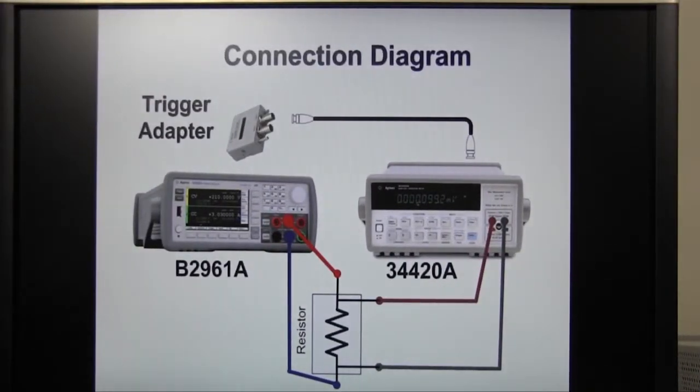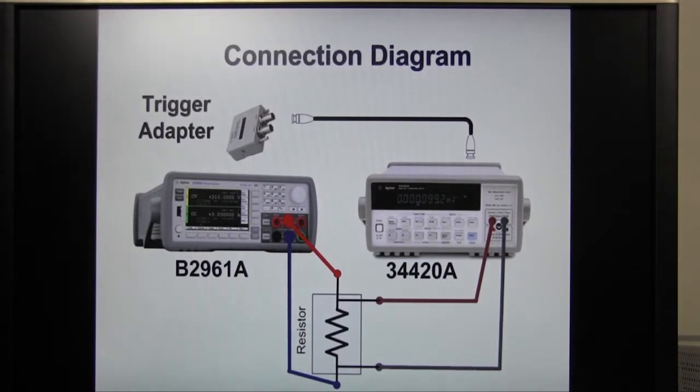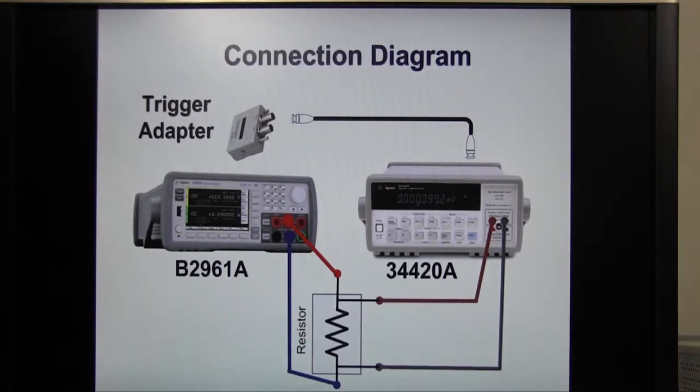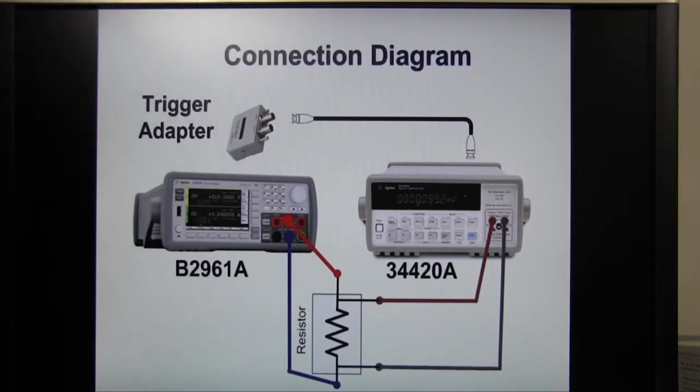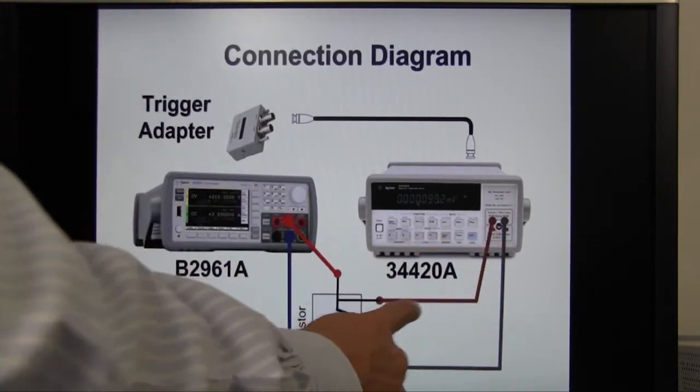This is the connection diagram. High-force and low-force terminal of B2961A is connected to the resistor. Terminals of 34420A are connected about the same way.